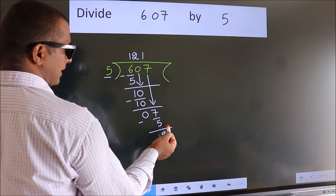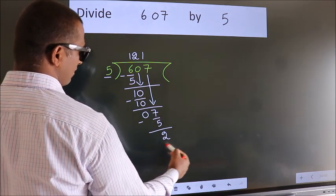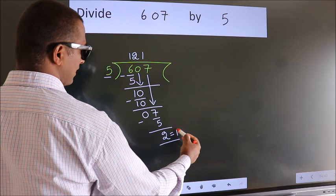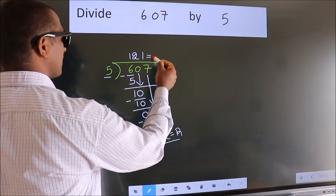No more numbers to bring it down. So we stop here. This is our remainder. This is our quotient.